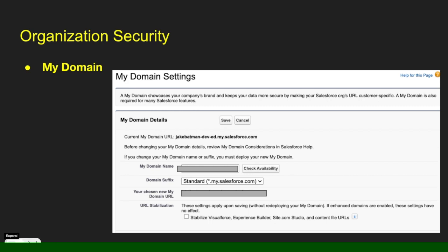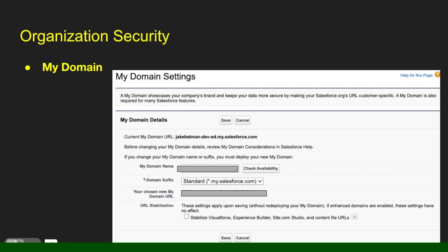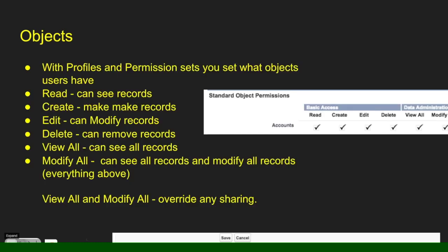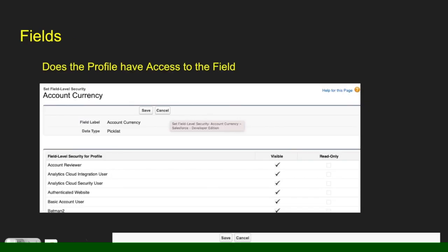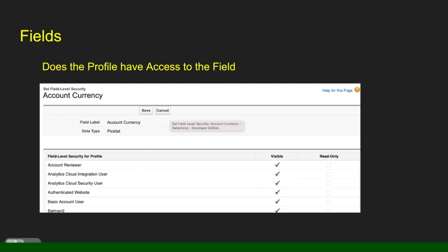You can also set up your domain — I always recommend setting that up. Like I said, we've talked about objects before with profiles. Read means you can see records, create means you can make records, edit means you can modify records, delete means you can remove records, view all means you can see all records, and modify all means you can see and modify all records — it will override any sharing that is set up within the org. When you set up a field, you can specify whether the profile or permission set has access to the field — you can check visibility or read only. At the field level, you can take a look at whether it's visible or read only per profile or permission set.